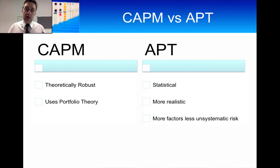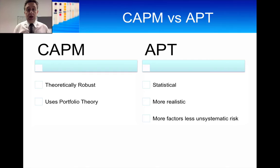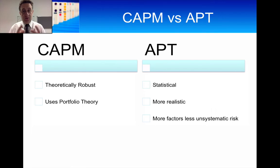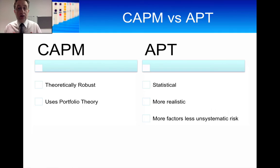With CAPM, you start off with portfolio theory — two risky assets, then bring in the risk-free asset with the risky asset. We derive the expression for portfolios and then derive the CAPM formula for individual securities. Theoretically it's very robust and intuitive. So CAPM is a theoretical model. The arbitrage pricing theory, on the other hand, is a statistical model.